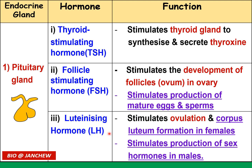Luteinizing hormone (LH) stimulates ovulation and the formation of the corpus luteum in females. The corpus luteum will be discussed further in Chapter 4. LH also stimulates the production of sex hormones in males — this is a new addition not in the previous video, so write it down.